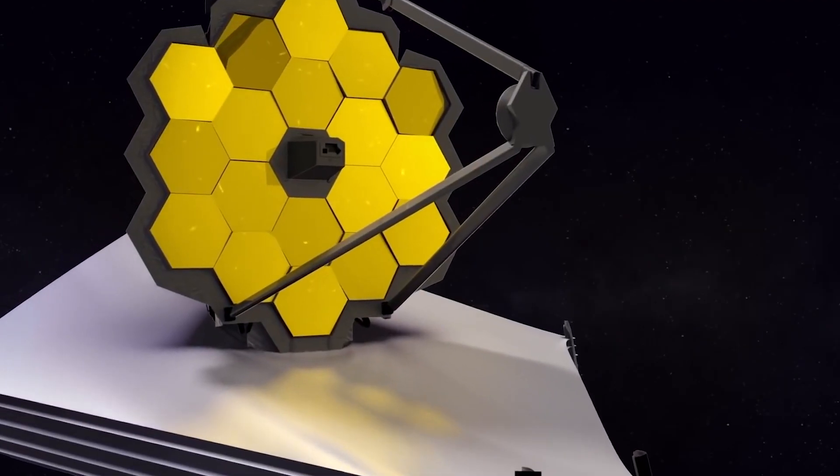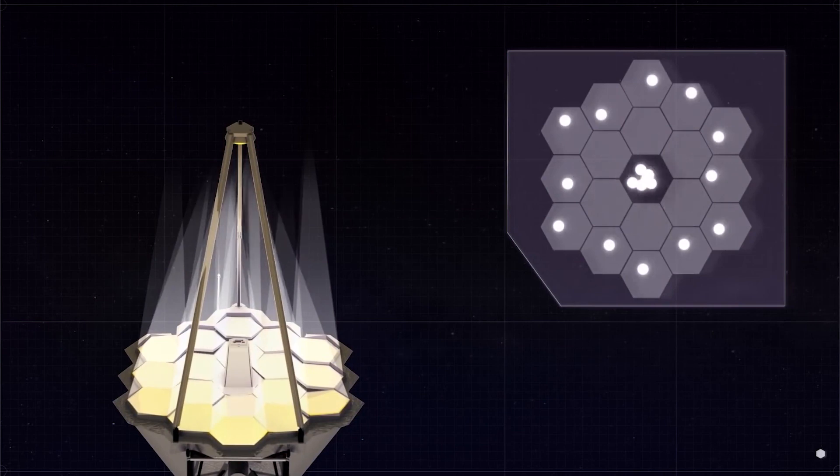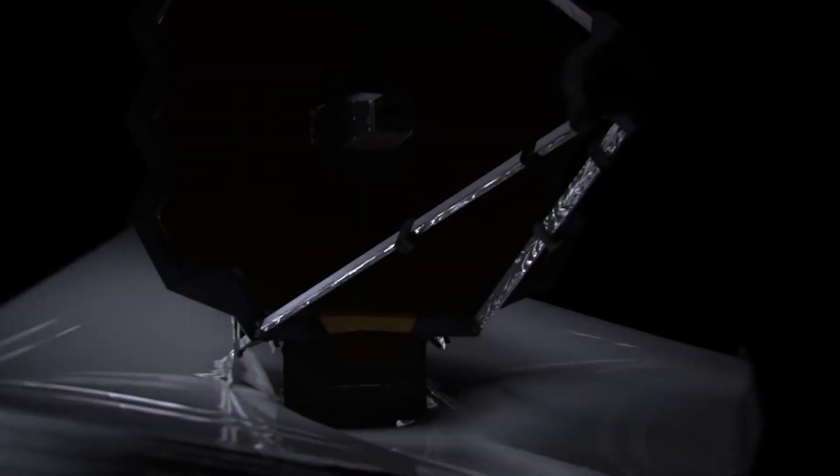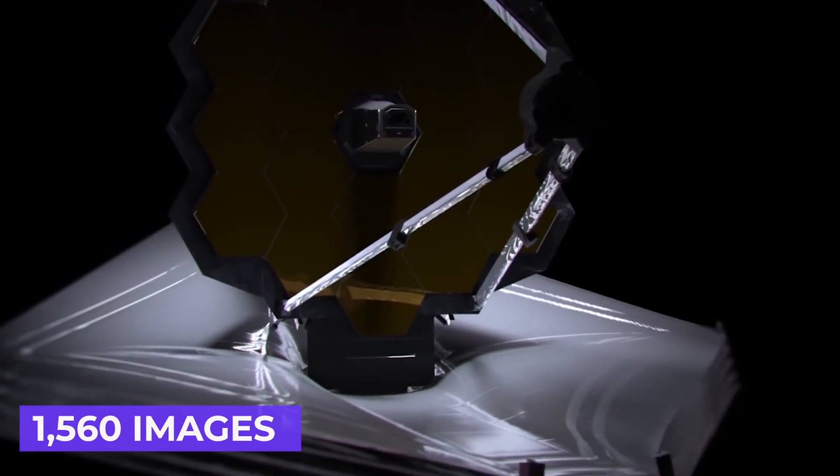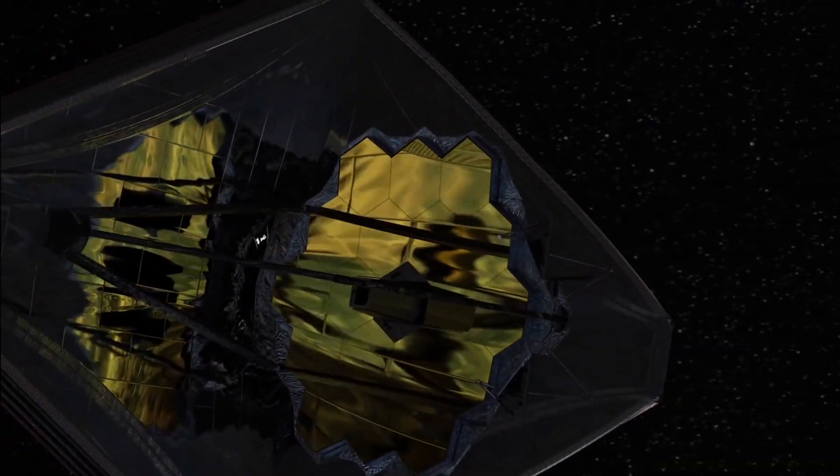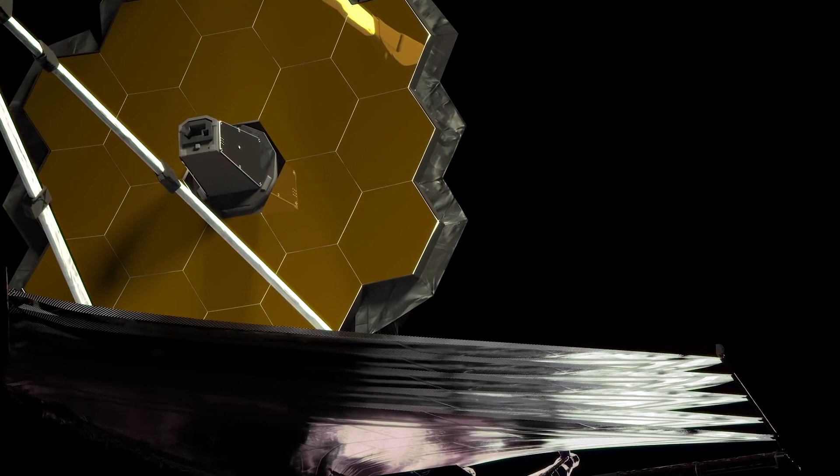Each of the mirror segments reflected the light back onto the NIRCAM detector creating 18 separate dots. This mosaic was a result of the Webb capturing 1560 images over the course of 25 hours, although the observatory was able to find the star during the first 6 hours and using just 16 images.